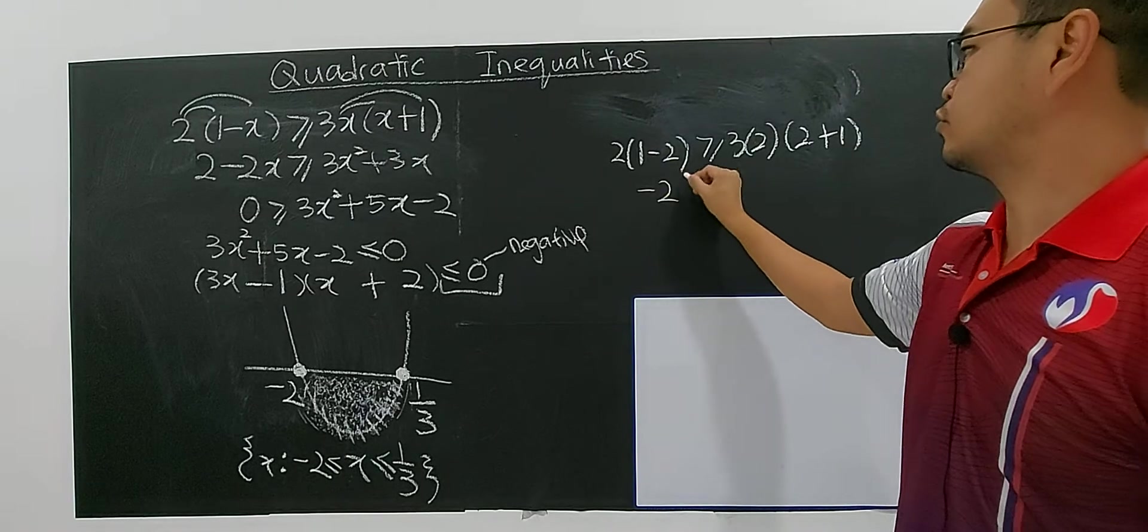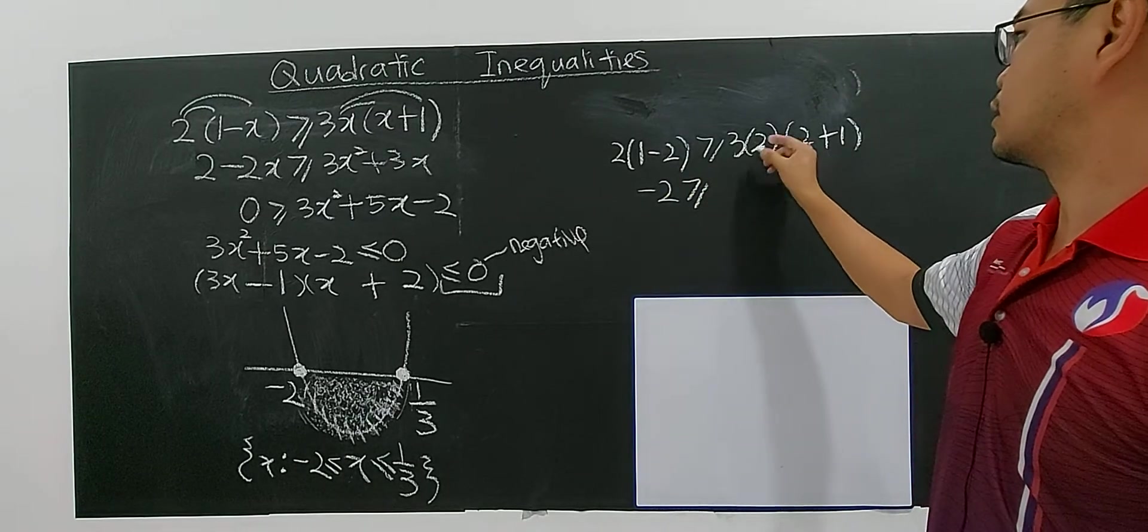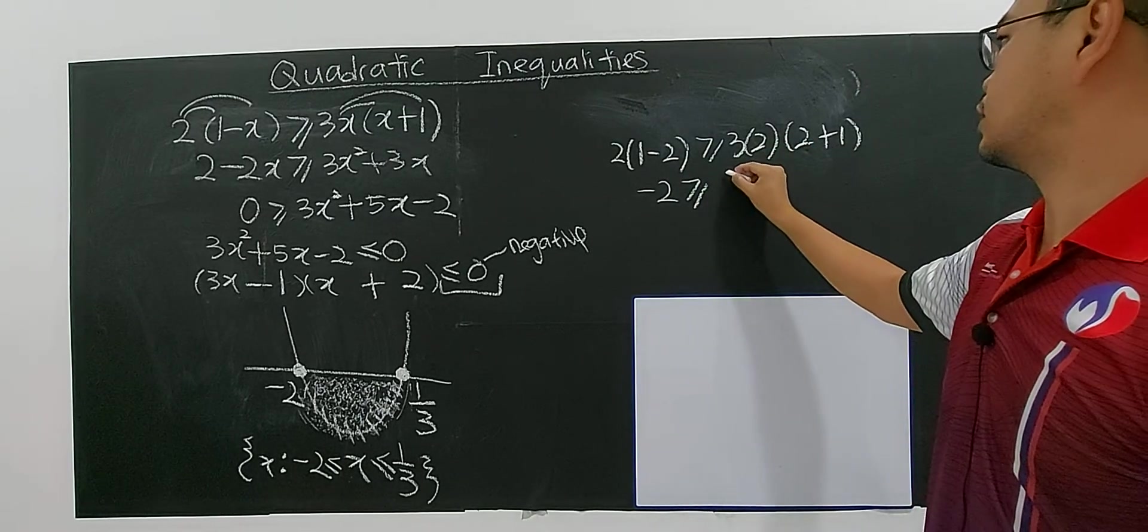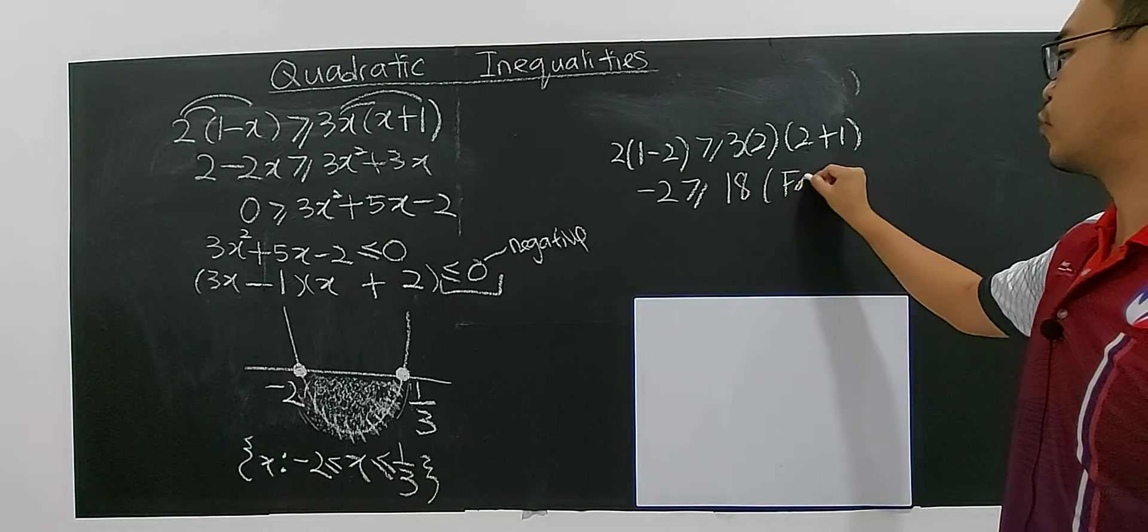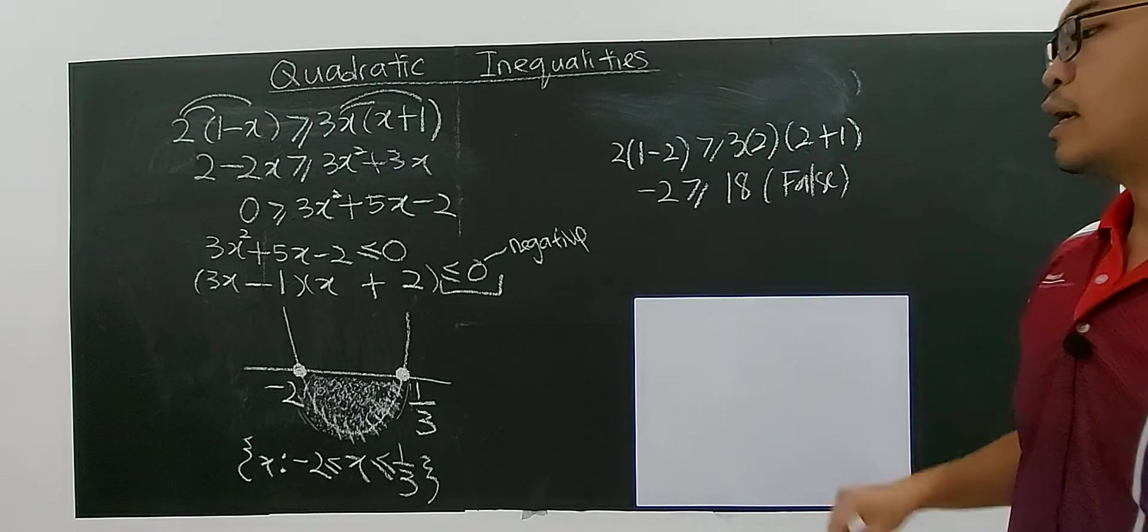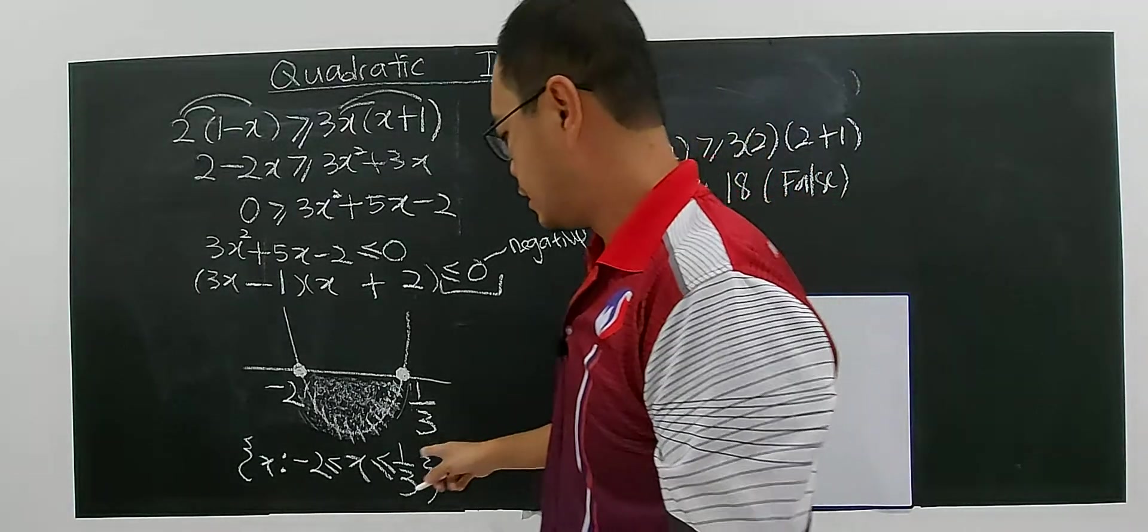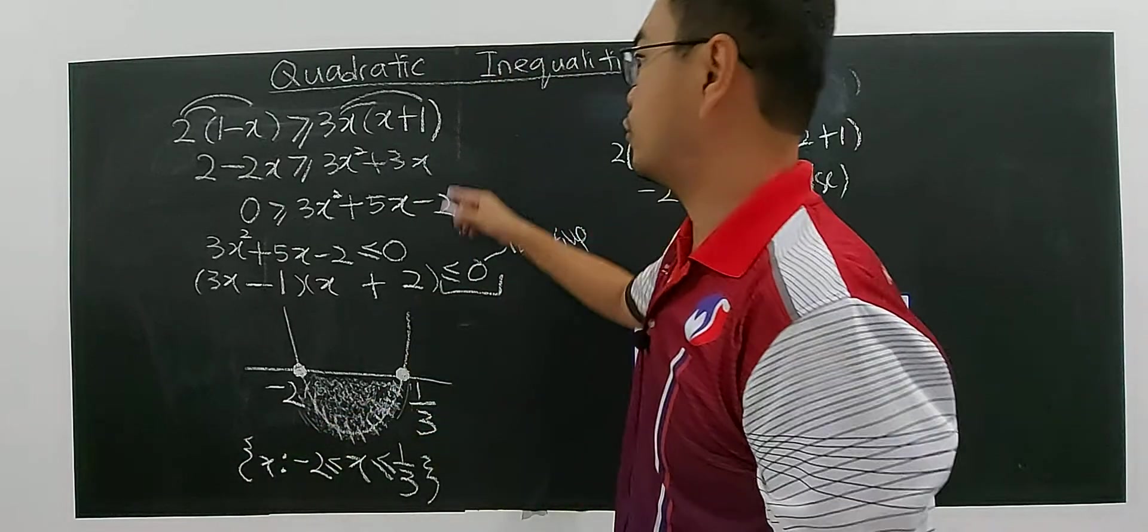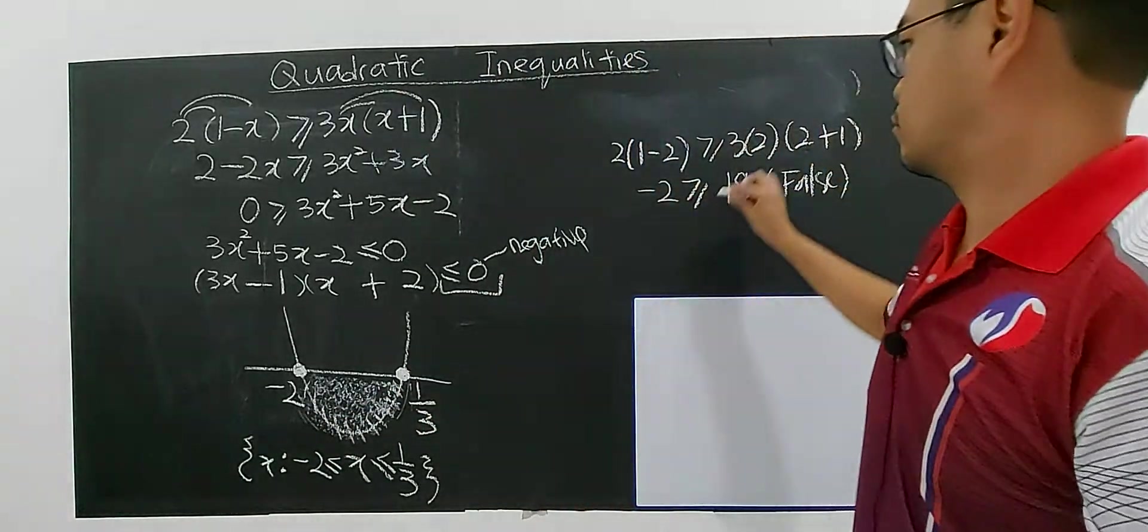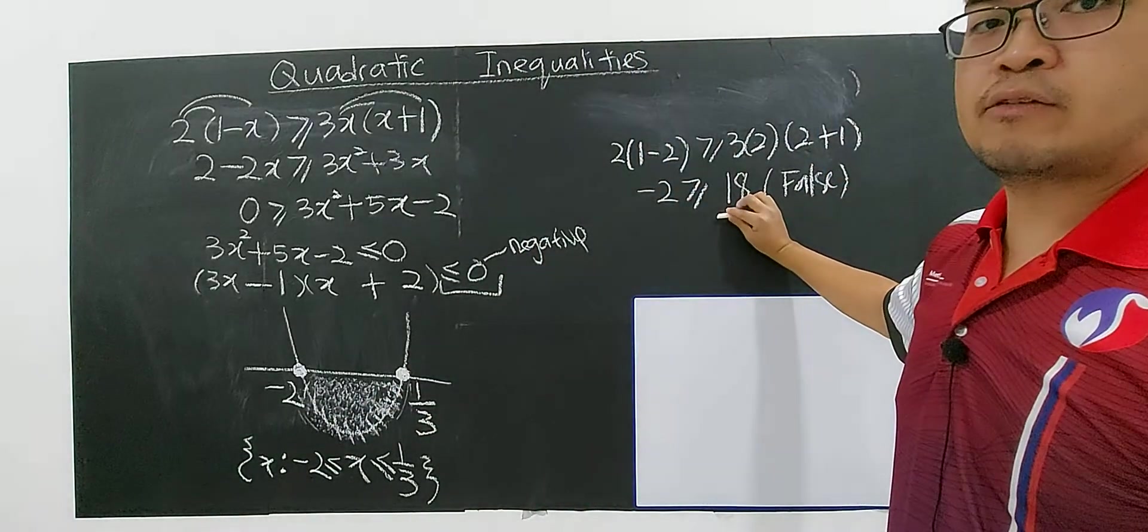So this one you have negative two. This is six, six, three, eighteen. Is this true? This is false. False. Any value of x that's out of the range will give you a false statement. False statement.